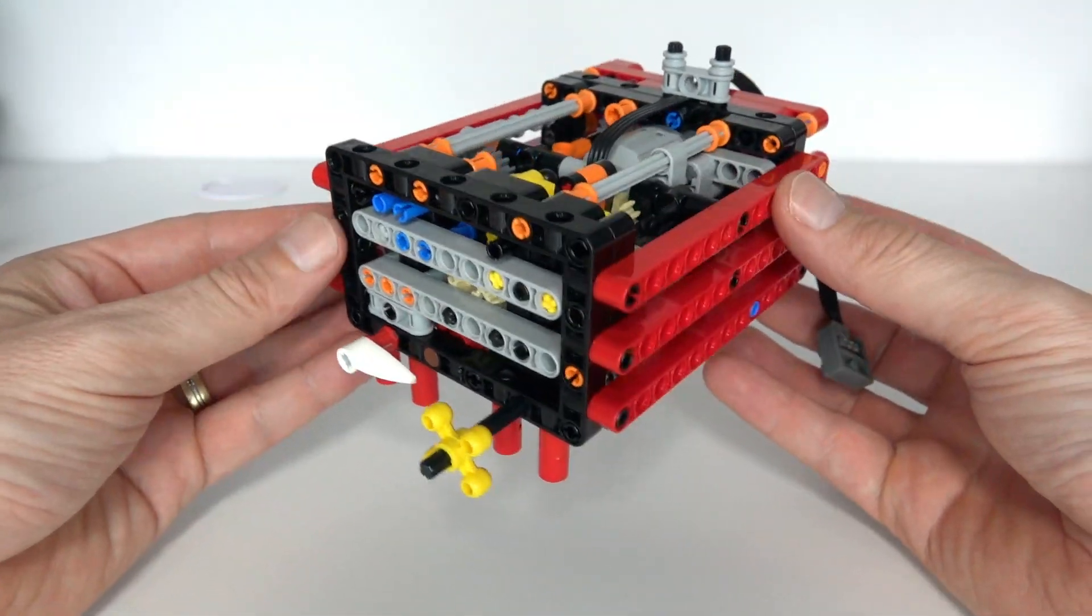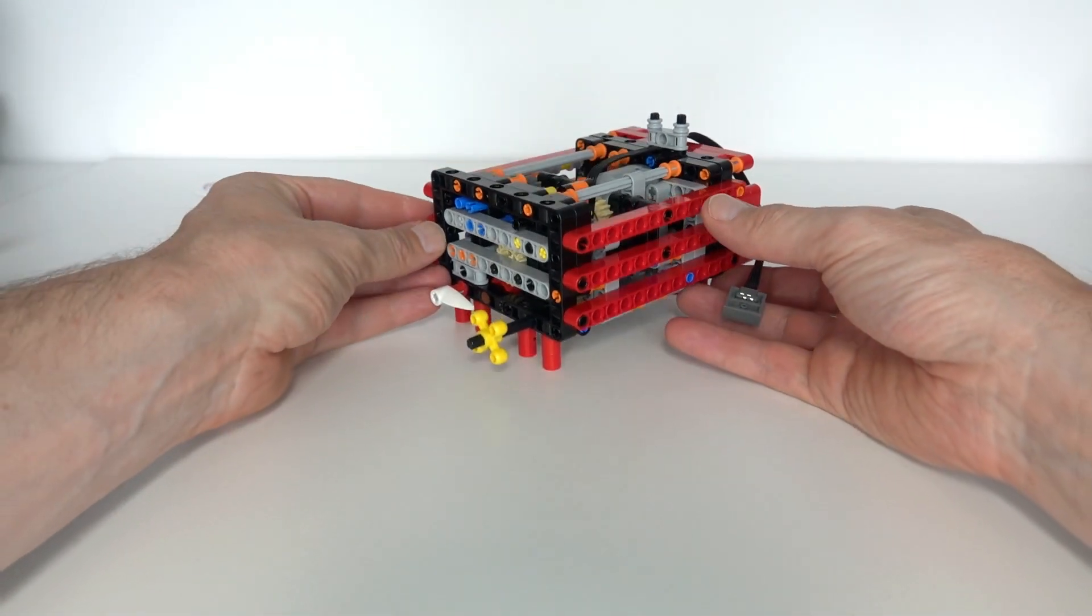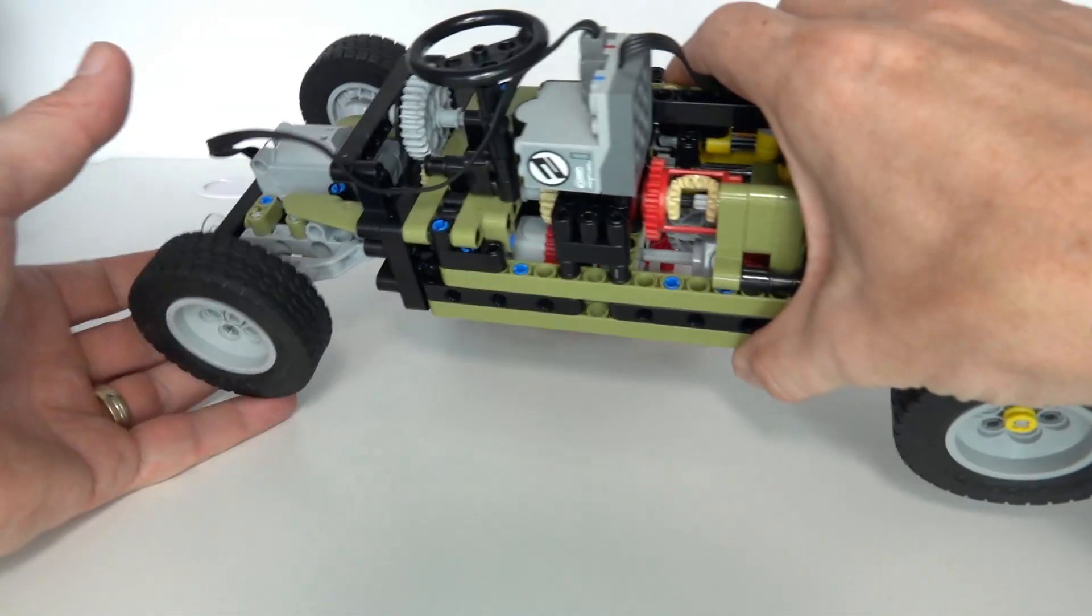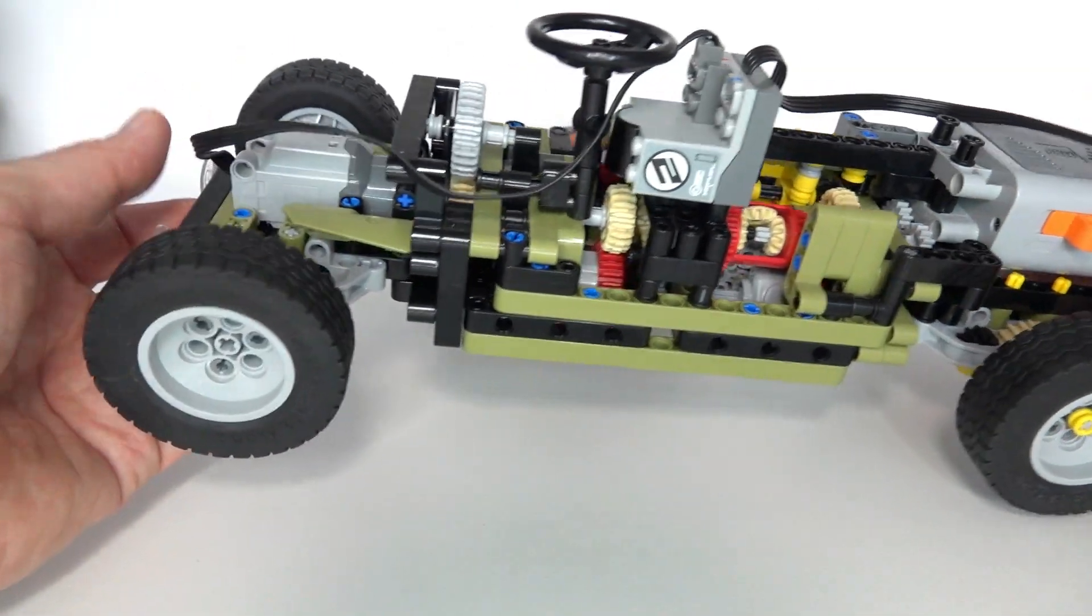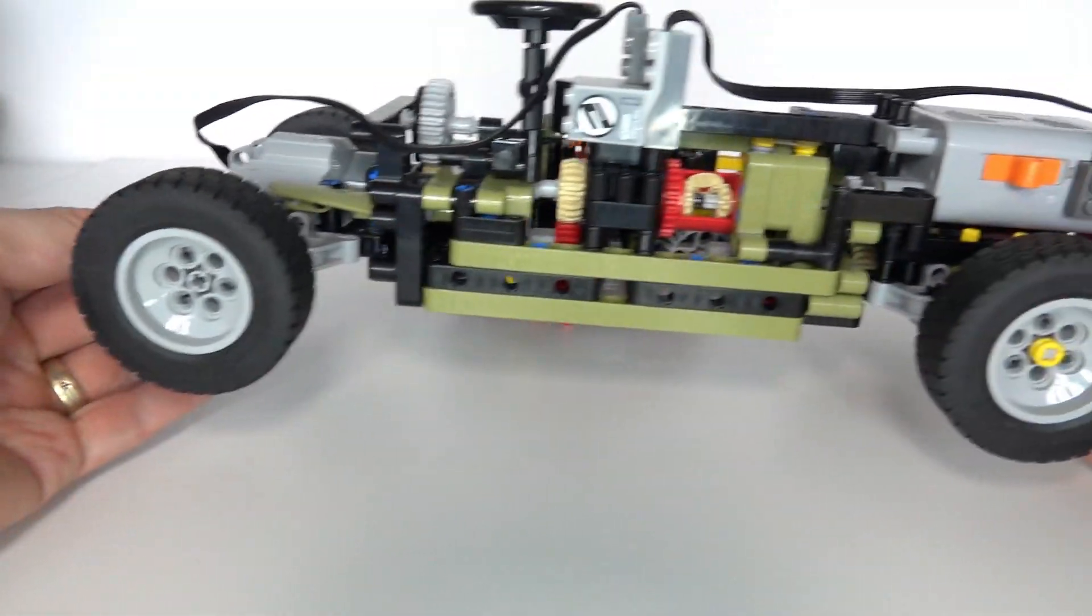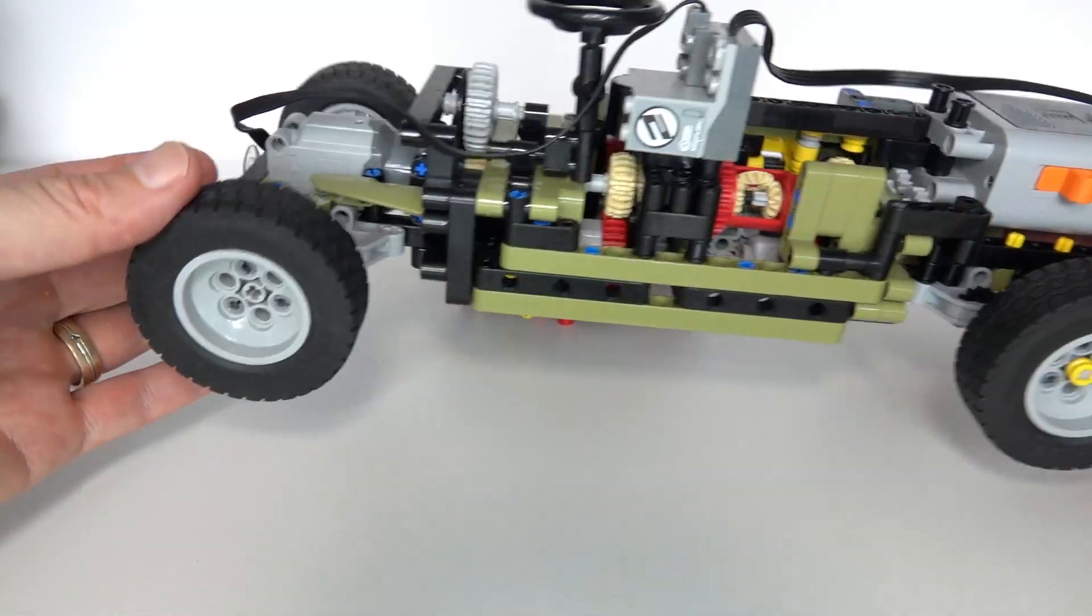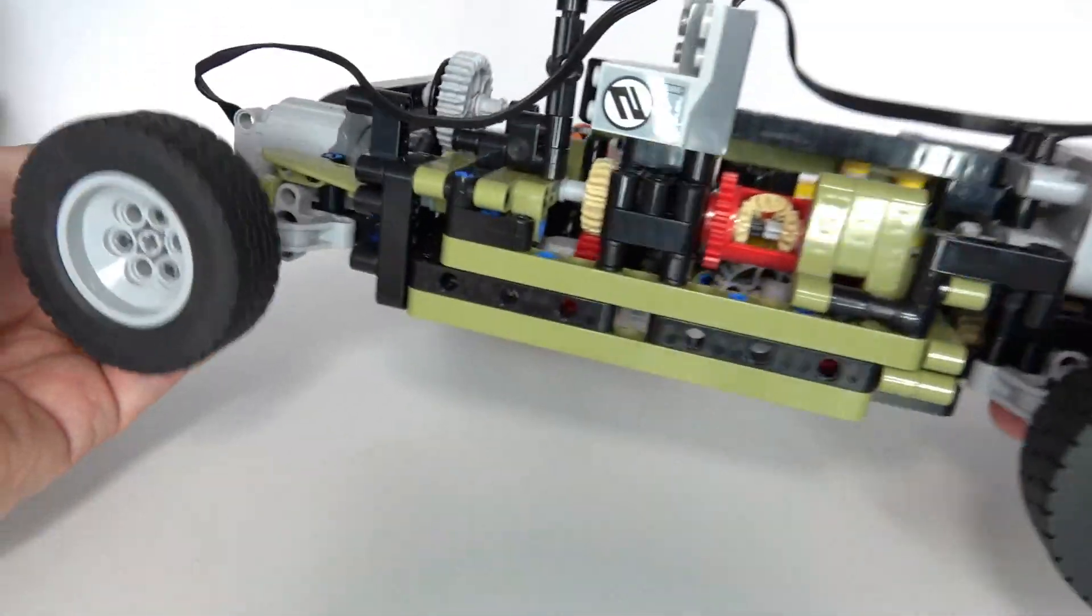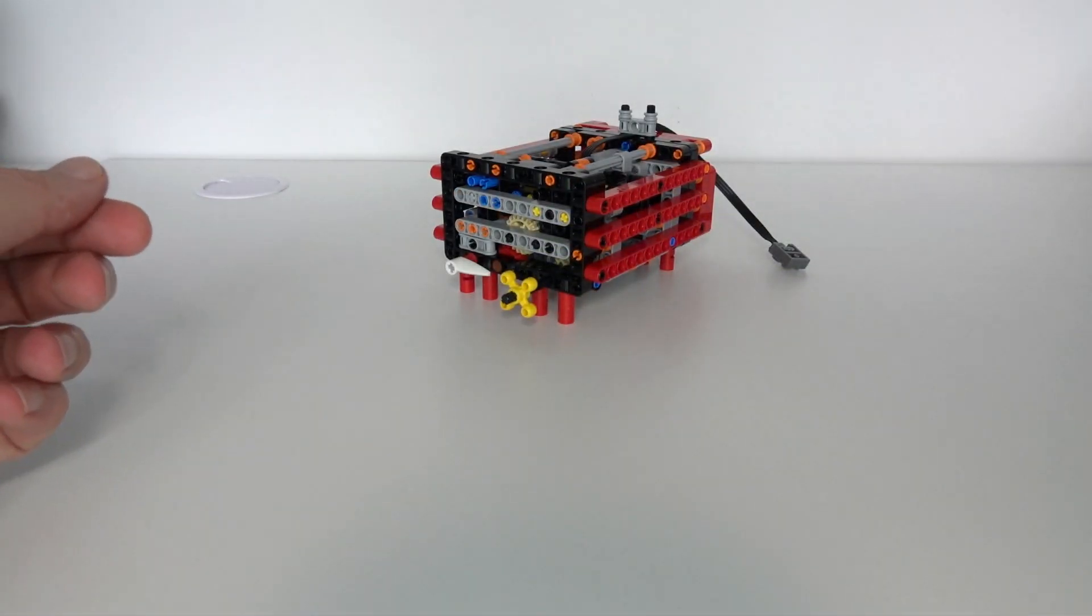It's a gearbox that's trying to solve a particular problem that I've come across myself. The problem is, let's say you're creating a remote-controlled car like, for example, this one. And you want to be able to drive the car, you want to be able to steer the car, and also change gears remotely on the car. Then generally speaking, you'd need three motors to do that, but you've got three different functions.